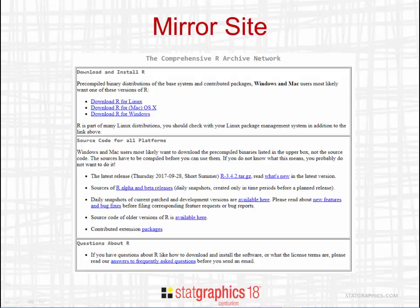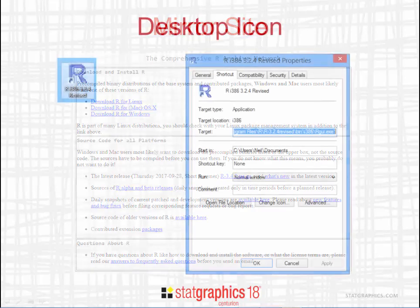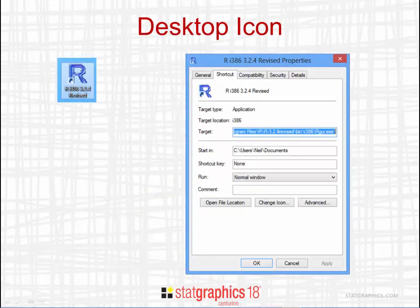You'll then see a page with links for downloading and installing R for Linux, for the Mac, and for Windows. Click on the link that says Download R for Windows. This will start a standard download and installation process similar to other Windows applications. Follow the instructions.